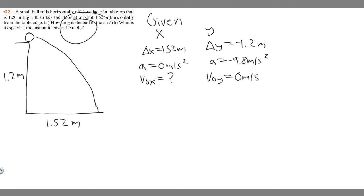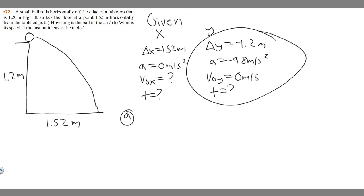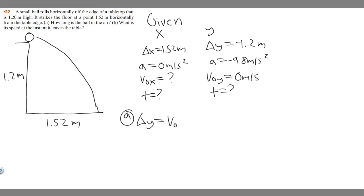How long is the ball in the air — that's solving for time. We need to solve for time, and notice that in the y direction we're given more variables, so we use those. The formula we want is: delta y equals v sub 0y times t plus one-half times a times t squared. We'll use this formula to solve.